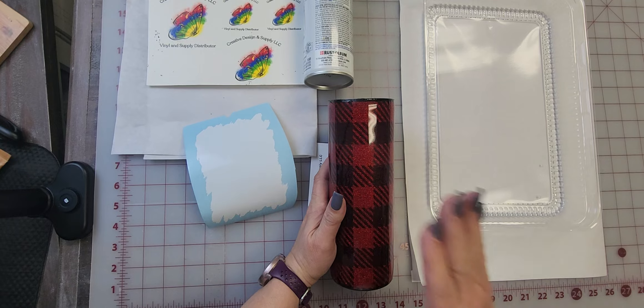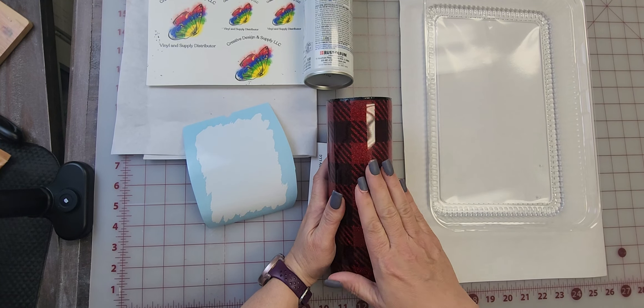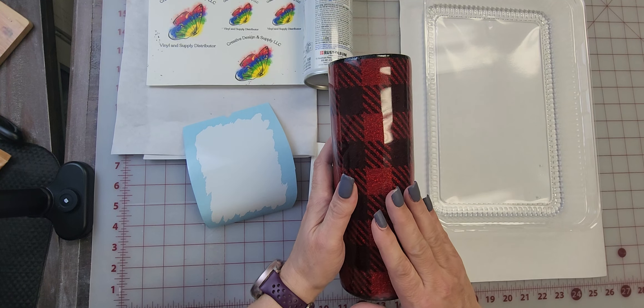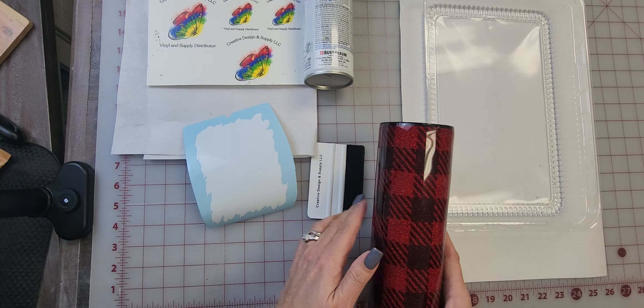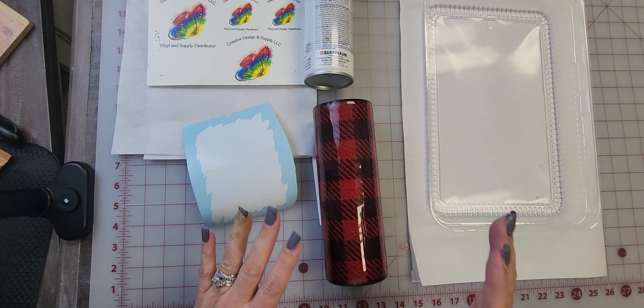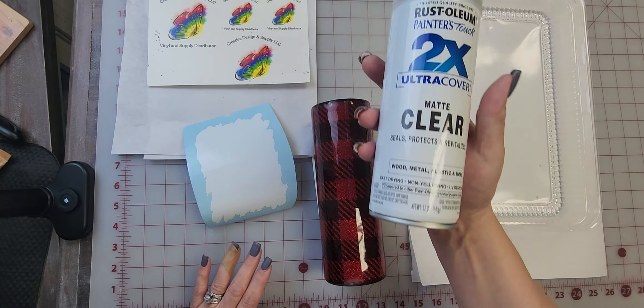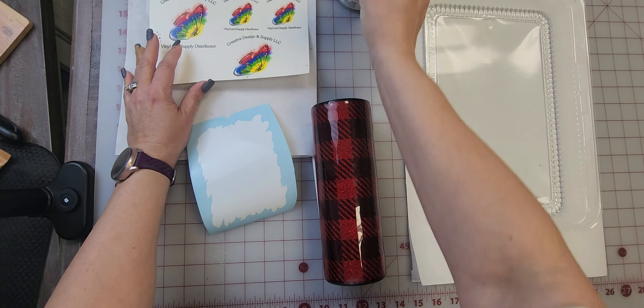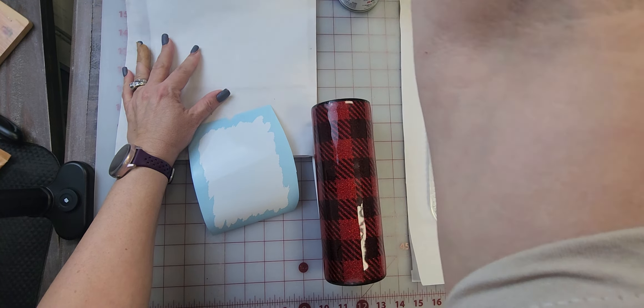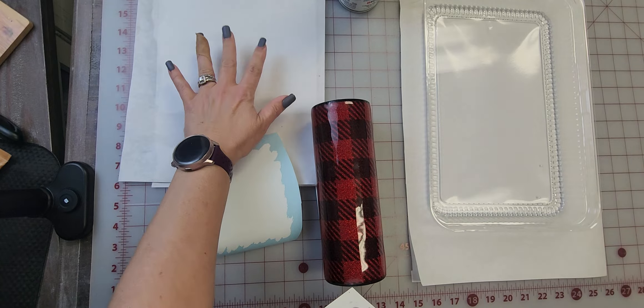I actually sublimated on HTV to get my buffalo plaid and now I am going to apply a water slide. After I printed out my water slide, I actually spray tacked it on there.